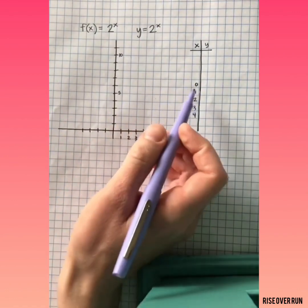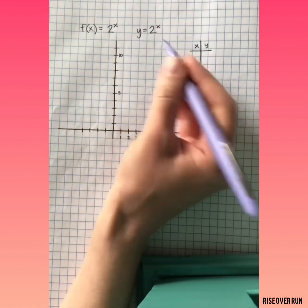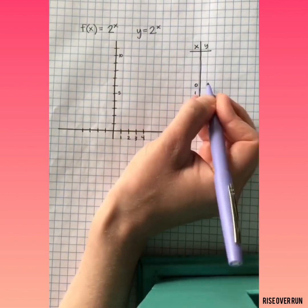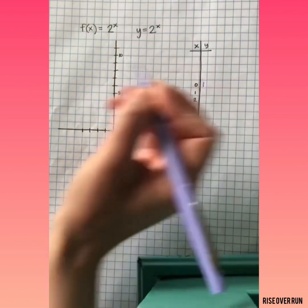To graph it, let's make a table of values. Let's start with 0 here, 2 to the 0 power. Remember, anything raised to the 0 power is 1.